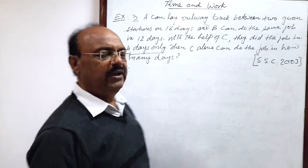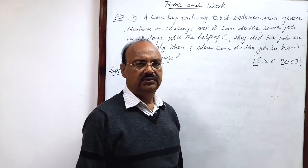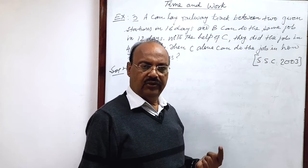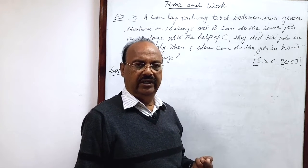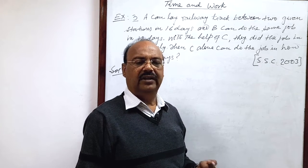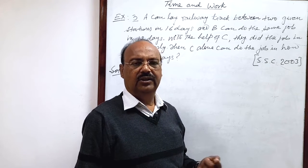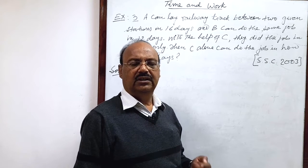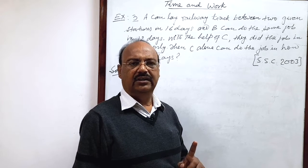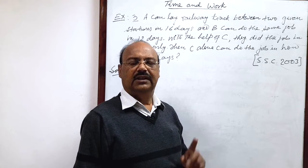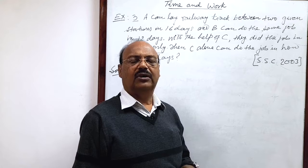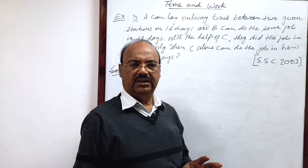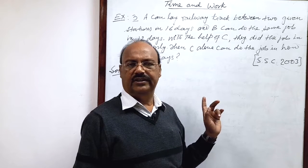So here we will calculate the amount of work done by A in one day, amount of work done by B in one day and amount of work done when all the three work together. Then we will find out the amount of work done by C in one day. How? By subtracting sum of amount of work done by A and B in one day from amount of work done by all the three people A, B and C.